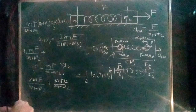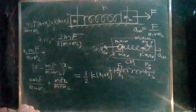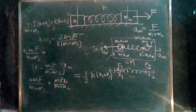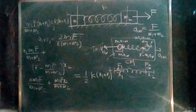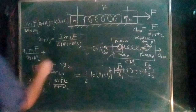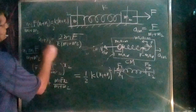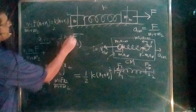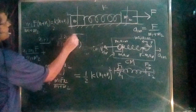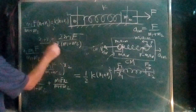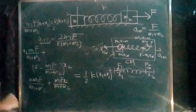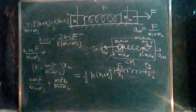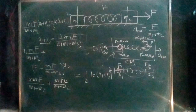So the maximum extension is 2m1F / [k·(m1+m2)]. This shortcut method using the center of mass concept is much less lengthy than the differential equation approach. We can verify the units: mass cancels and force equals k times extension, so the units are consistent and the answer is correct.